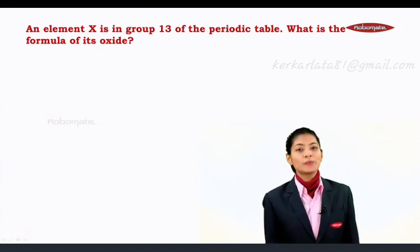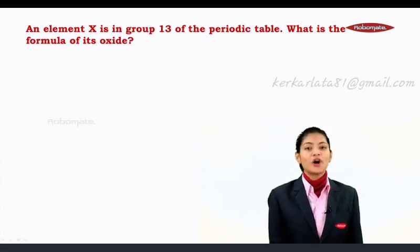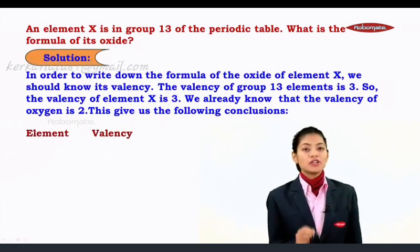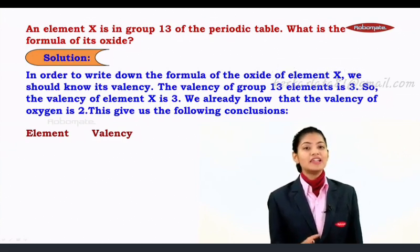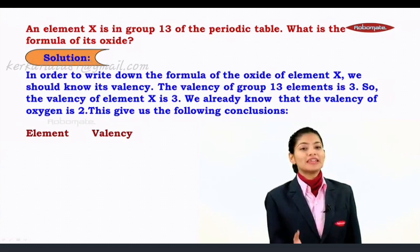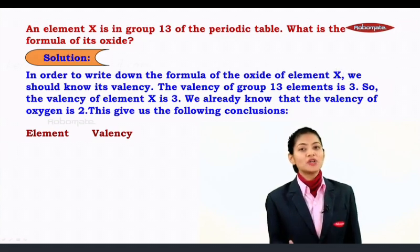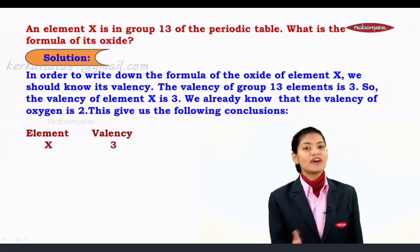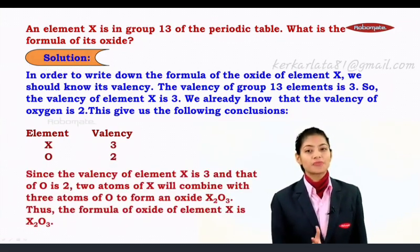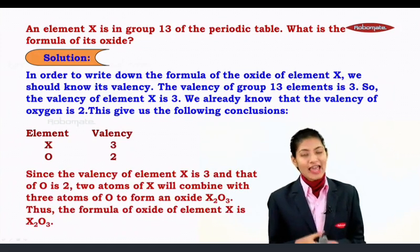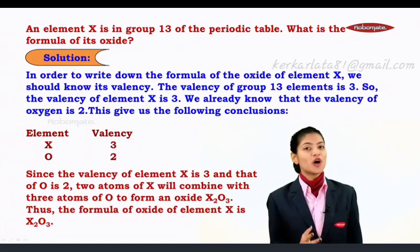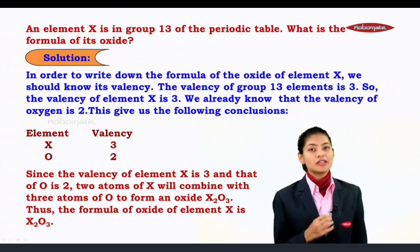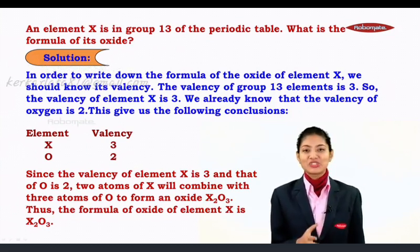Moving on to the third board question: element X is in group 13 of the periodic table — what is the formula of its oxide? To write the formula we need to know the valency. The valency of group 13 elements is 3, so the valency of X is 3. The valency of oxygen is 2. Since X has valency 3 and oxygen has valency 2, two atoms of X combine with three atoms of O to form the oxide X₂O₃.